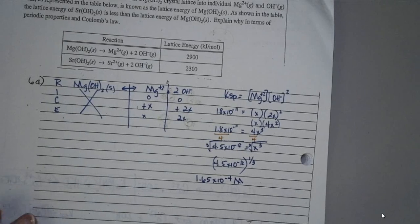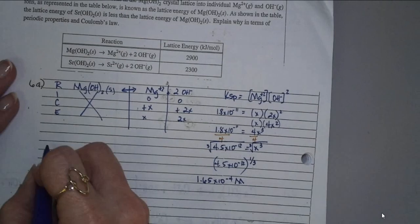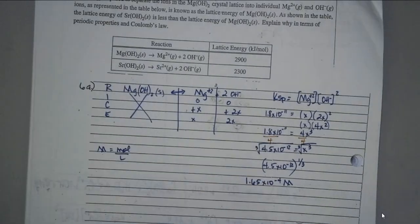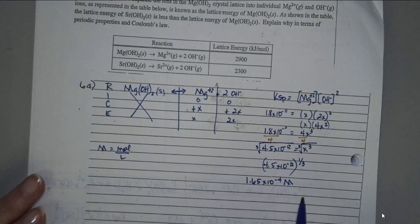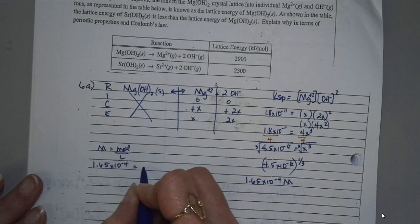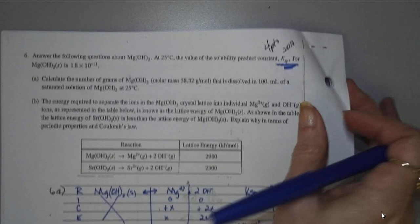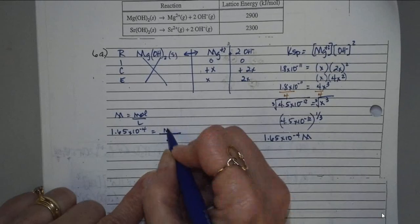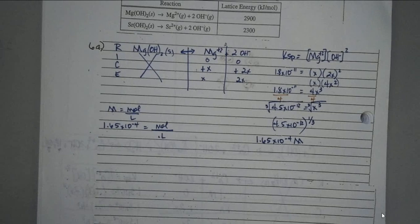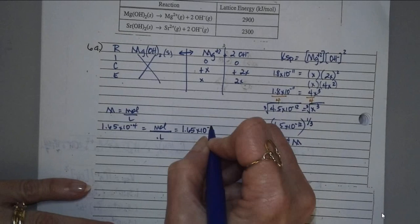We need moles. So if molarity is moles over liters, then what we have here is we have the molarity 1.65 times 10 to the negative 4 and we have the liters. Didn't they say up here it's in 100 mils? So we have 0.1 liters. We need moles. So solve that for moles. And when you solve that for moles, did you guys get 1.65 times 10 to the negative 5? 1.65 times 10 to the negative 5 moles. Label stuff. Make sure you label it with the units of measurement.